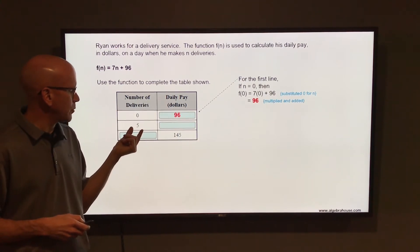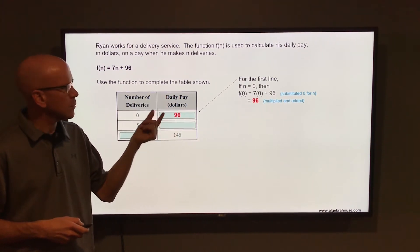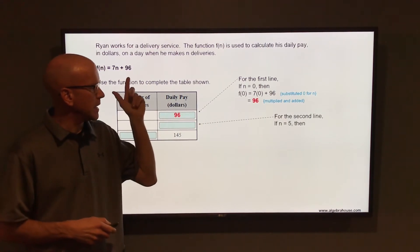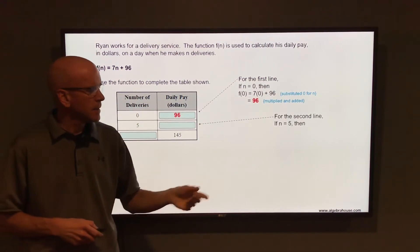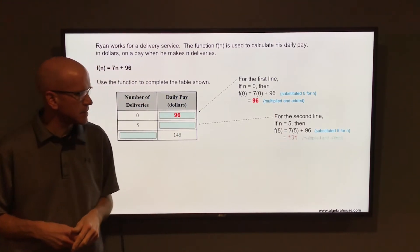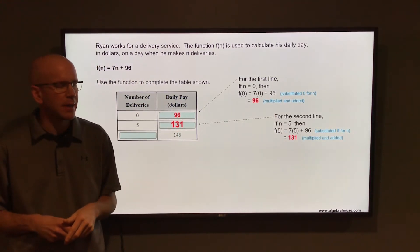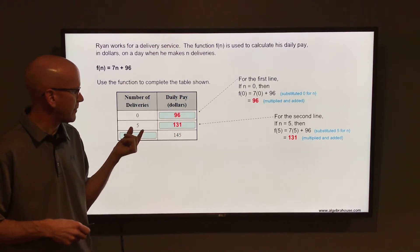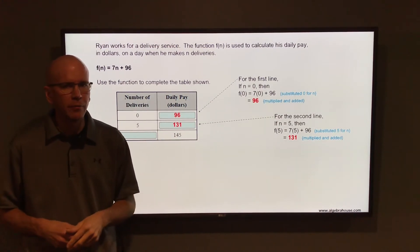For 5 deliveries, how much money does he make? We'll substitute 5 for n into that 7n + 96. So f(5) would be 7 times 5 plus 96. That is 35 plus 96 and that is 131 dollars. So for 5 deliveries, he's making 131 dollars.